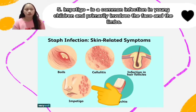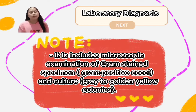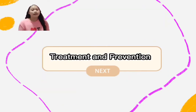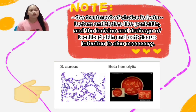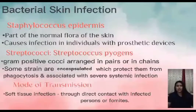Number five is impetigo, a common infection in young children that primarily involves the face and eyelids. The last is Staphylococcal Scalded Skin Syndrome, primarily a disease found in newborns and young children. Laboratory diagnosis includes microscopic examination with Gram stain showing gram-positive cocci, and culture producing golden-yellow colonies. Treatment of choice is beta-lactam antibiotics like penicillin. Incision and drainage of localized skin and soft tissue infection is also necessary.